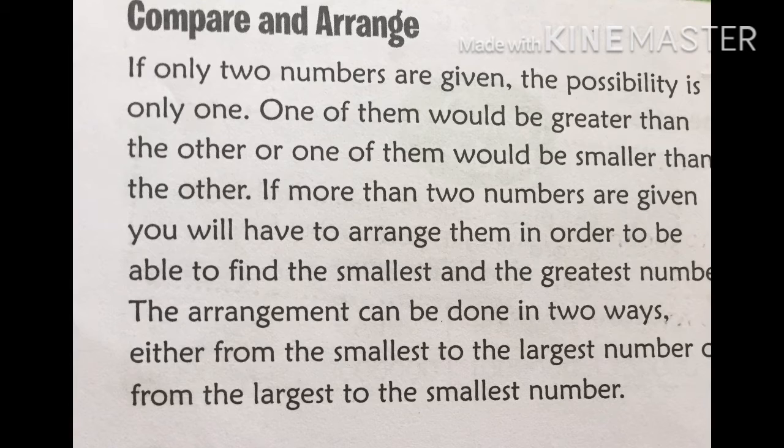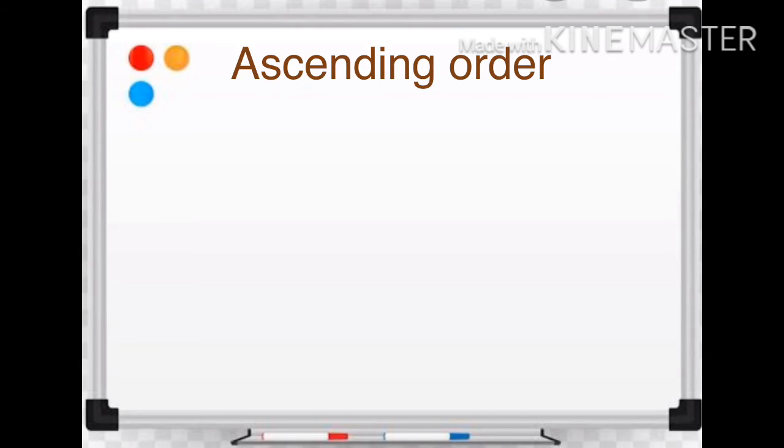You already know that if we arrange smallest to the greatest, we can call it ascending order. And if we arrange them from largest to the smallest, we can call it descending order. Now let us understand ascending order.